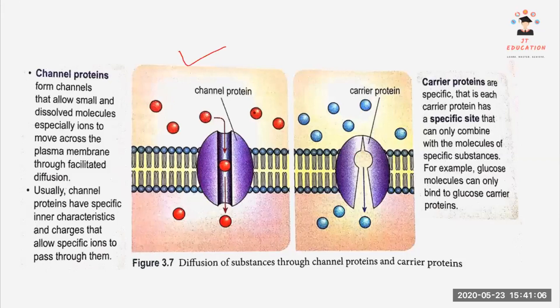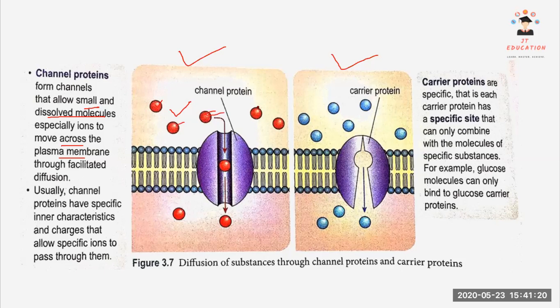On the left we have channel protein, on the right we have carrier protein. Channel protein will channel through small and dissolved molecules across the plasma membrane. Here we have more, this kind of small molecule.